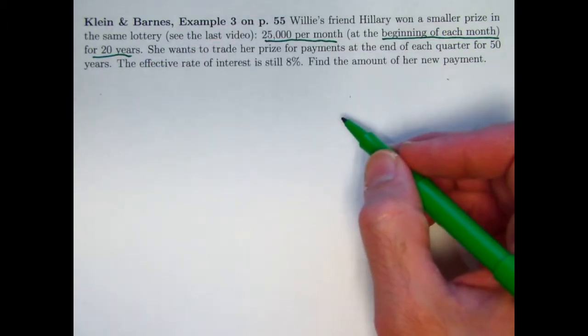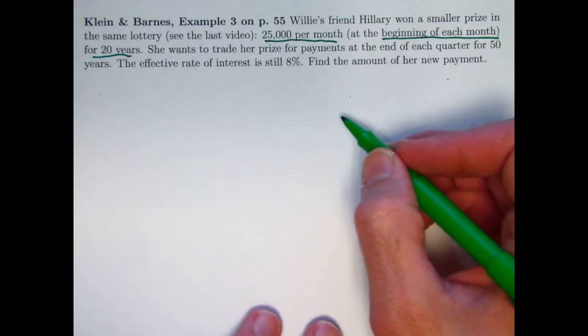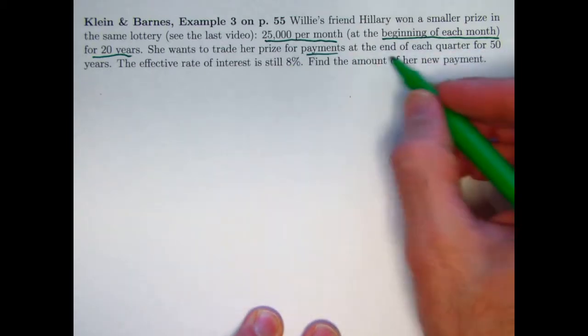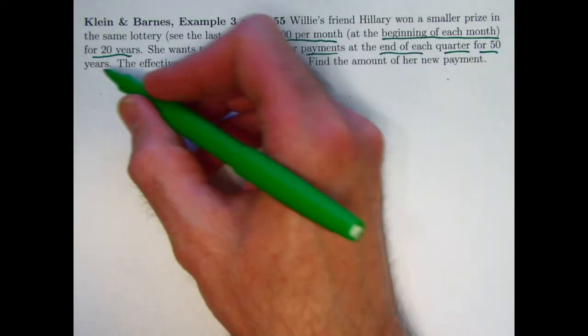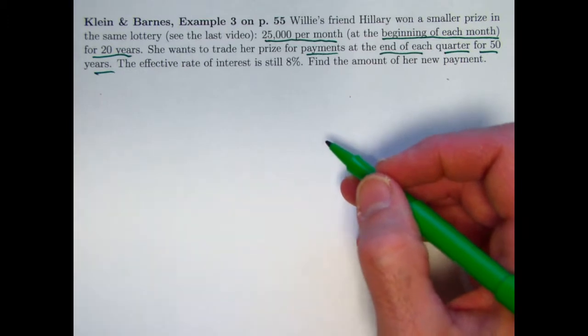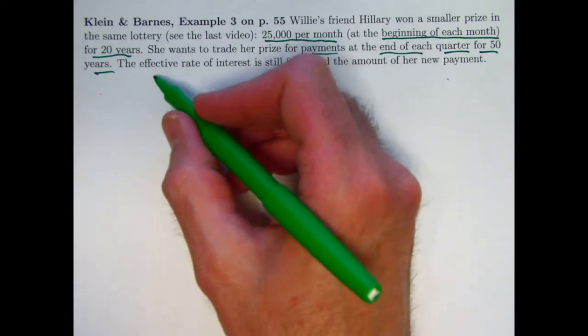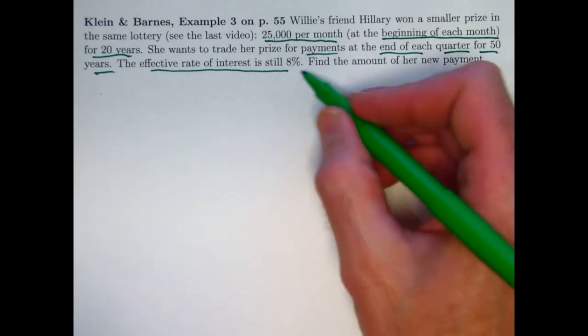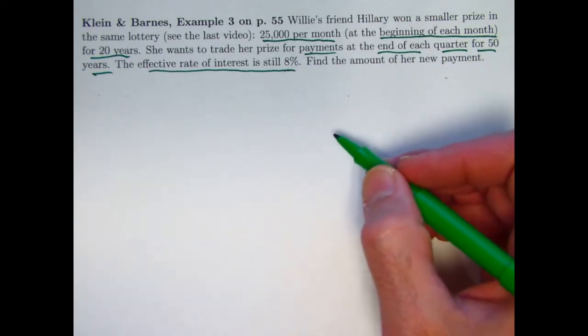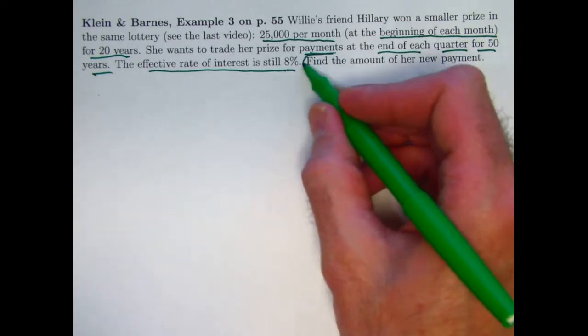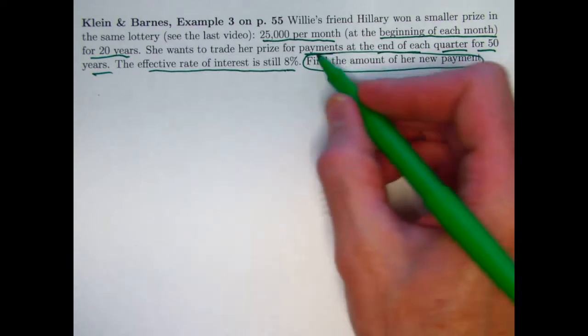But she'd prefer having a different annuity. Maybe she thinks she's going to live a long time. She prefers payments at the end of each quarter for 50 years. What would be the equivalent annuity that has the same present value? The effective interest rate, that would be an annual interest rate for both of these situations, is 8%. The goal is to find the amount of her new payment for that second annuity.